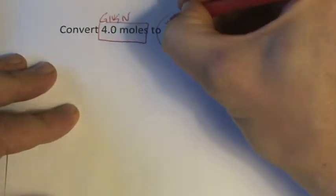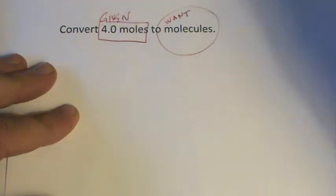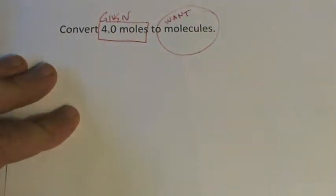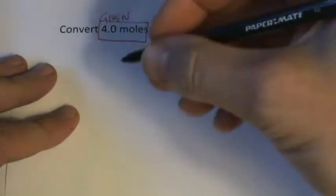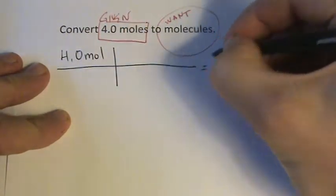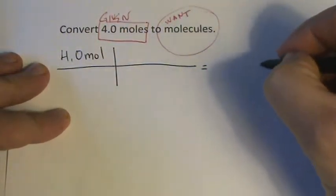We are given 4 moles, and we're trying to find out how many molecules we have. So let's set it up, we know what we want and what we need, so we have 4.0 moles, and I want ultimately to have molecules.